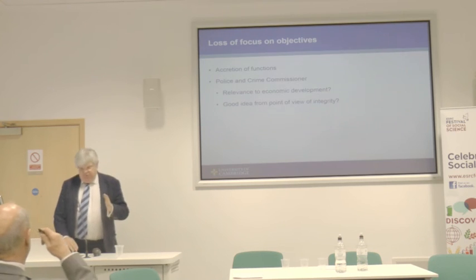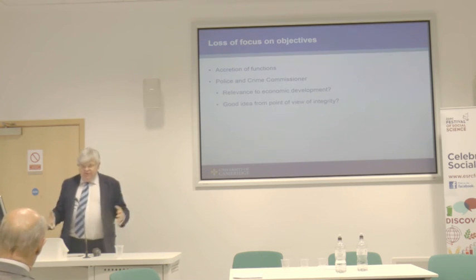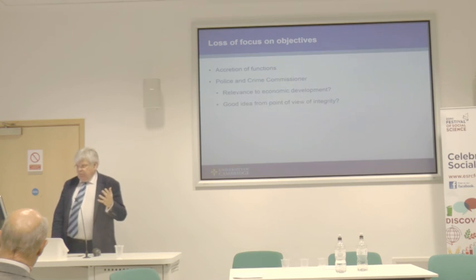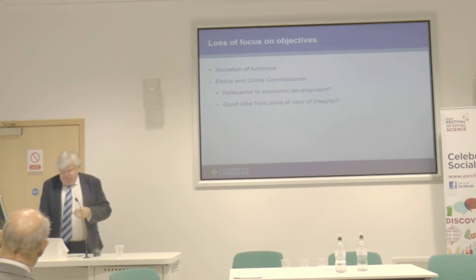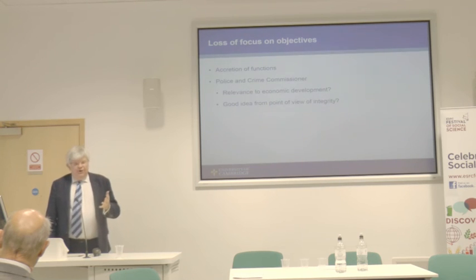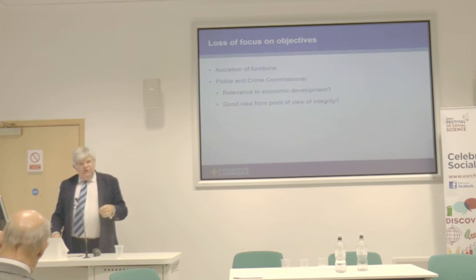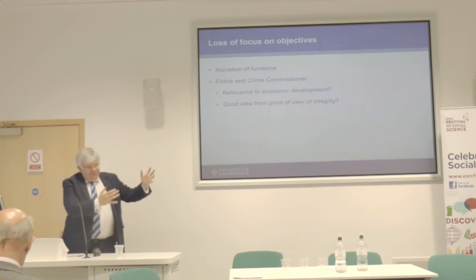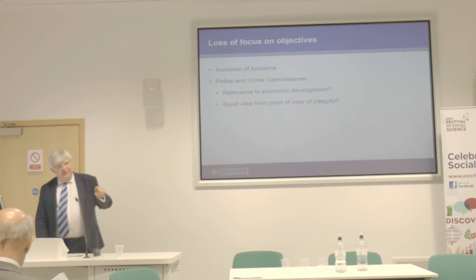Lots of focus on objectives. One of the things you notice in the devolution business is all sorts of new problems being added as the process goes on. The one I've noticed is the accretion to the role of mayor of the role of police and crime commissioner — this is especially happening in Manchester. And you start to wonder what the relevance of the mayor also being the police and crime commissioner is to economic development. But also, is that a good idea from the point of view of integrity? Do we really want one person to be in charge of the criminal justice system and everything else in local government? That sounds dangerous.